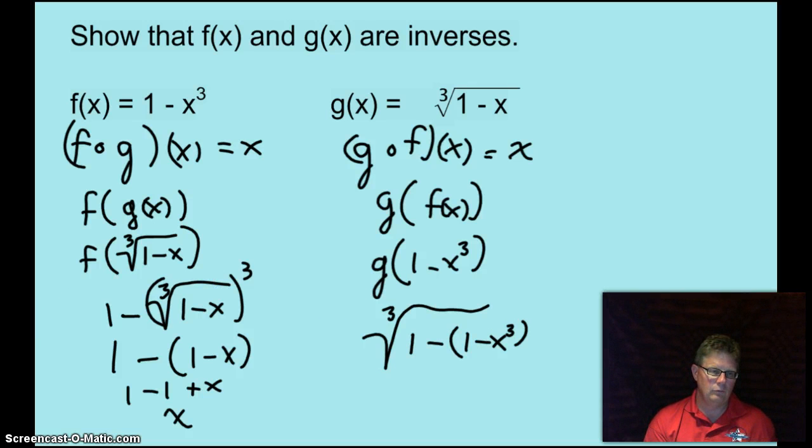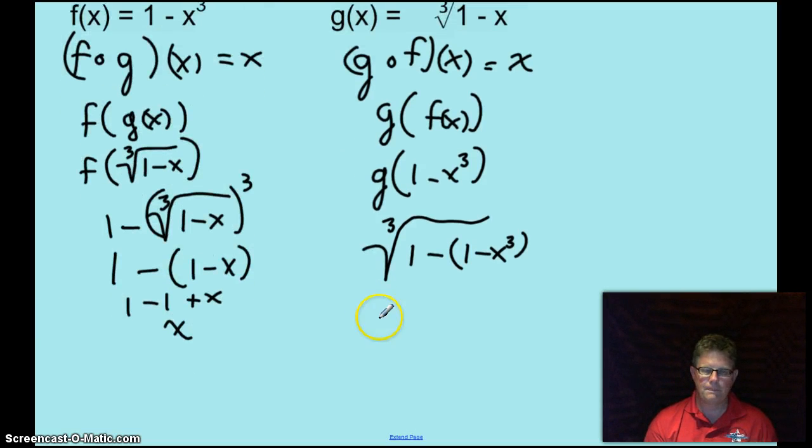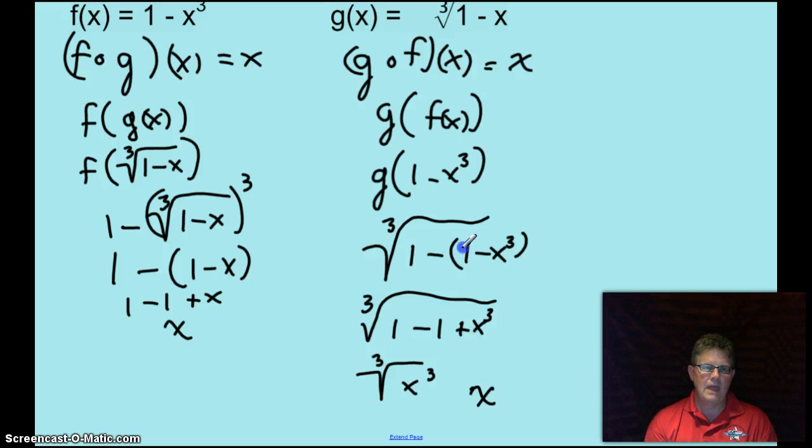Let me get some room here please. That would be the cube root of 1 minus 1 plus X cubed, cube root of X cubed which would equal X. So F of G of X equals X and G of F of X equals X. So those are inverse functions of each other.